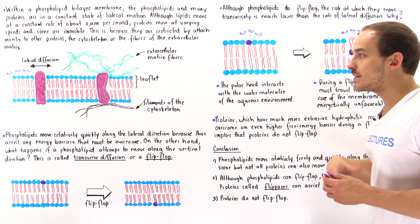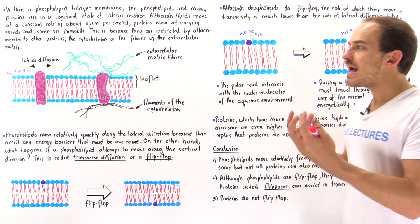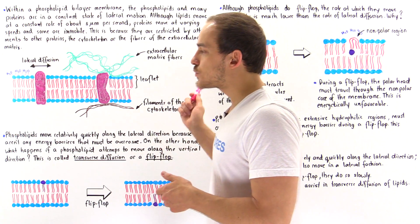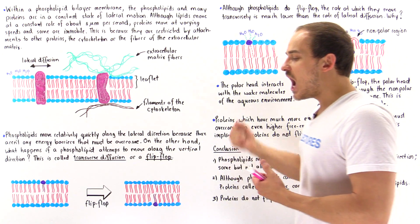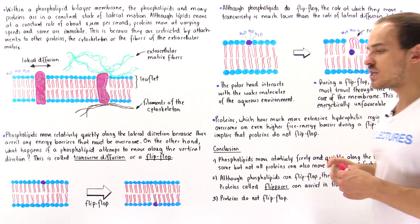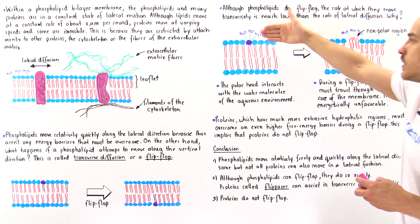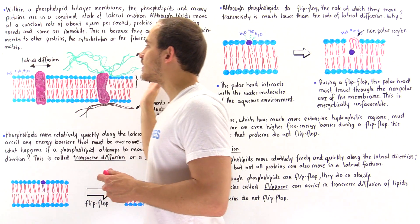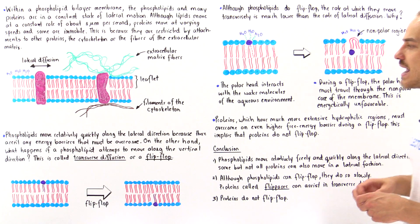What about proteins — can proteins actually flip-flop? Proteins have a much larger hydrophilic, or polar, region than phospholipids do. That's exactly why if a protein were to flip-flop, it would have to overcome a very large energy barrier, much higher than the energy barrier for phospholipid rotation. That's exactly why proteins do not actually flip-flop — they do not traverse that membrane. They only move along the lateral direction.